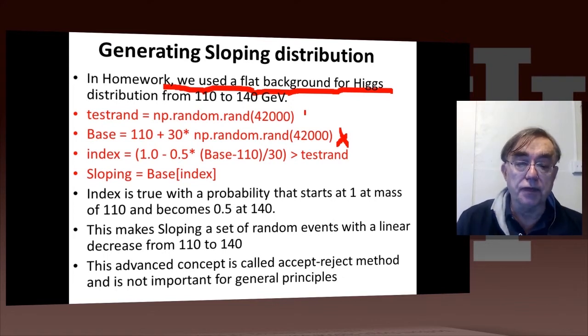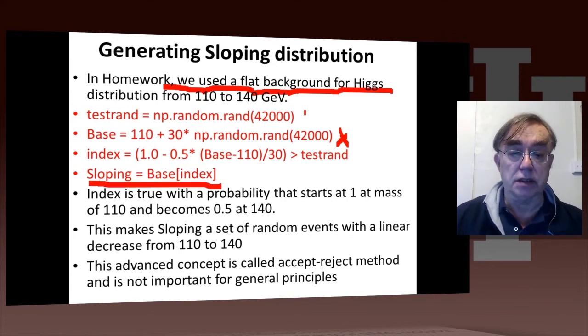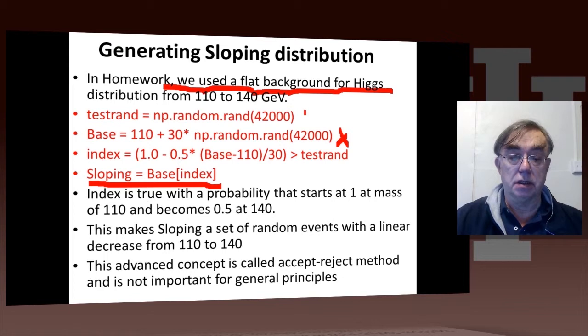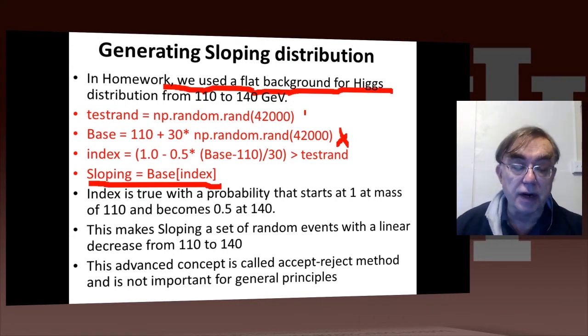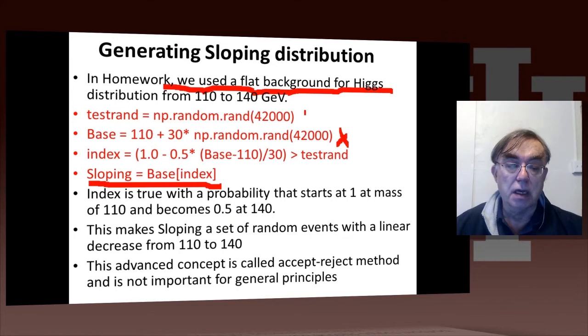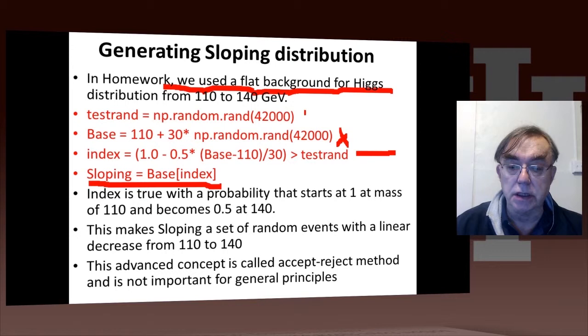Now we have here, sloping equals base of index, which is our final answer, which is a set of masses between 110 and 140, with a linear dependence on the mean number of events, which decreases by a factor of two, as we go from 110 to 140. And that is done by here, some magic of statistics, and here by some magic of Python.